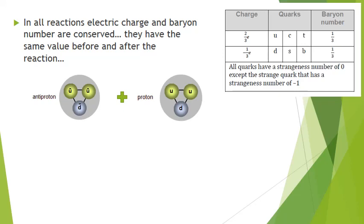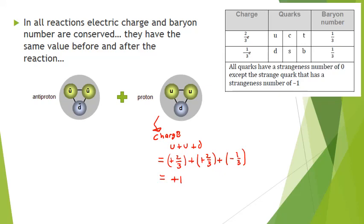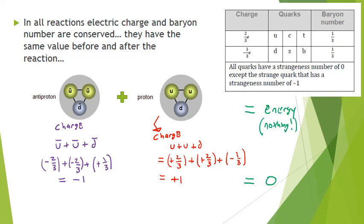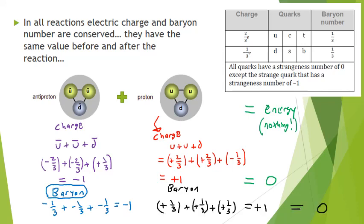For example, if we bring together an anti-proton plus a proton: the proton has charge plus one, the anti-proton has charge negative one. Combining them gives a total charge of zero — they annihilate each other, and mass turns into energy. Nothing exists afterwards except for energy. This is called annihilation. Looking at the baryon number: negative one plus positive one equals zero, so the charge and baryon number are both zero after annihilation — pure energy.